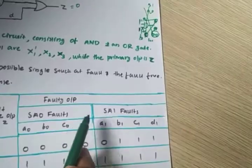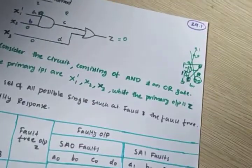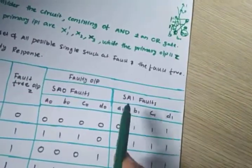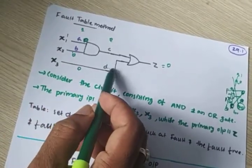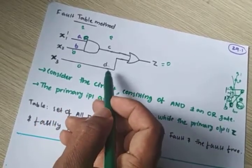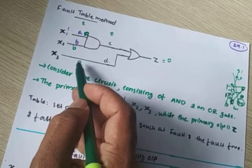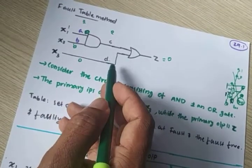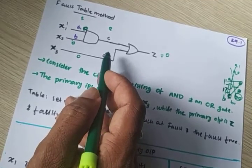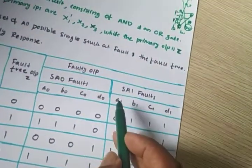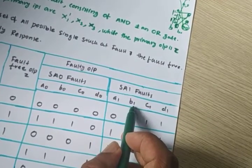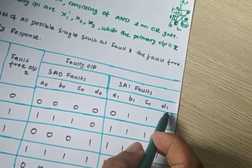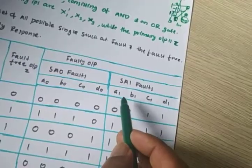b0 means 0 is stuck at B. c0 means 0 is stuck at C. d0 means 0 is stuck at D. That means a0 is stuck at line A. SA1 means stuck-at-1. So d1 means 1 is stuck at D, that's why D is forced to 1. The column for stuck-at-1 has A1 stuck at A, B1 stuck at B, C1 stuck at C, D1 stuck at D.